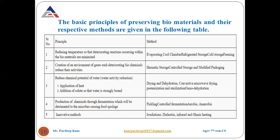The basic principles of preserving biomaterials and their respective methods are next. The first principle is to reduce temperature in order to reduce deteriorating reactions within biomaterials, using methods such as evaporating cool chambers, refrigerated storage, and cool storage. There are five principles available, and according to them, different methods are used to preserve foods. You can go through the table to understand the different principles and their different methods of preservation.